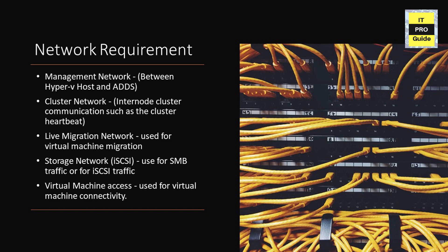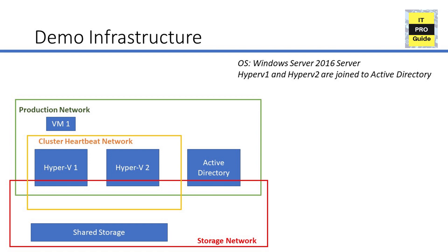There are other traffic types like live migration and virtual machine access that you need to design based on your organization's environment. In this demo, I have two Hyper-V hosts — Hyper-V1 and Hyper-V2 — joined to an Active Directory. I have shared storage connected to both Hyper-V hosts through a separate storage network, a production network to manage the hosts and connect to Active Directory, and a cluster heartbeat network for inter-cluster node communication.